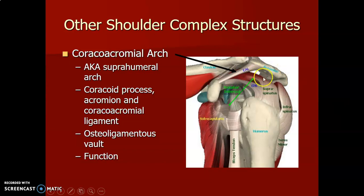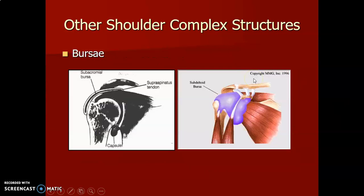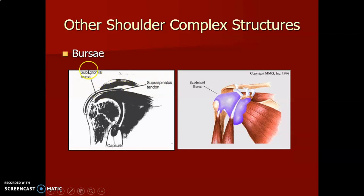There are bursae in the shoulder: the supraspinatus tendon, beneath which is the subacromial bursa. There is also the subdeltoid bursa.